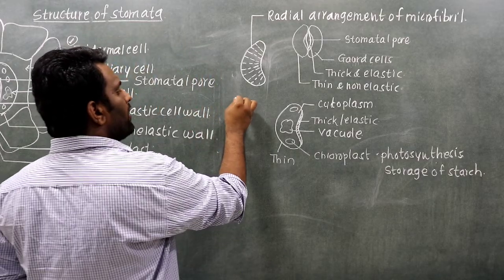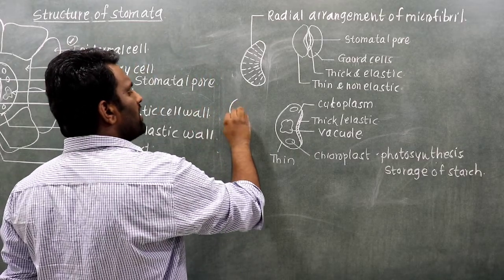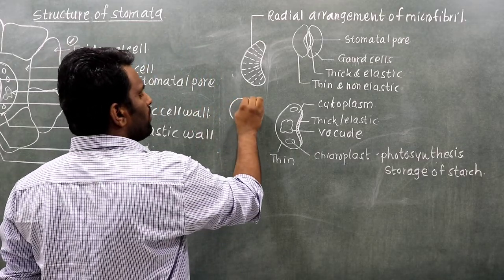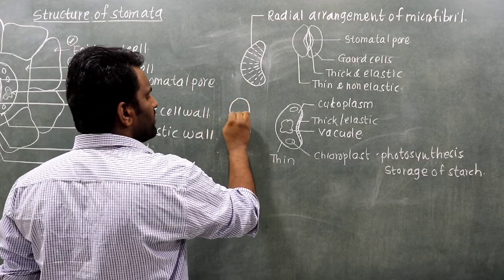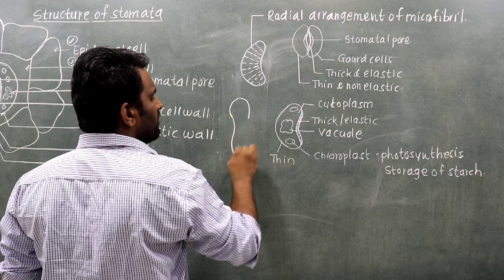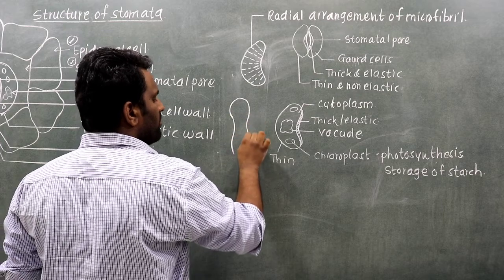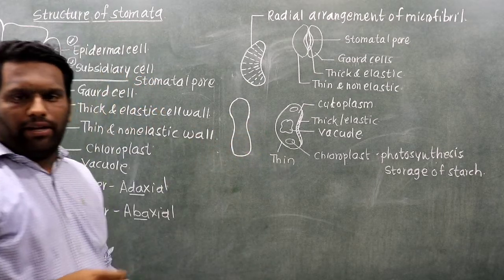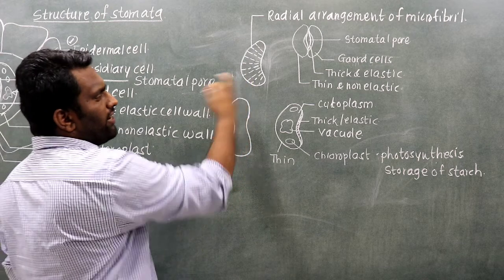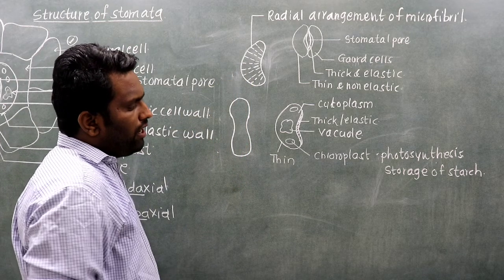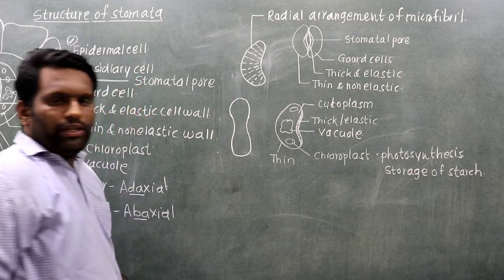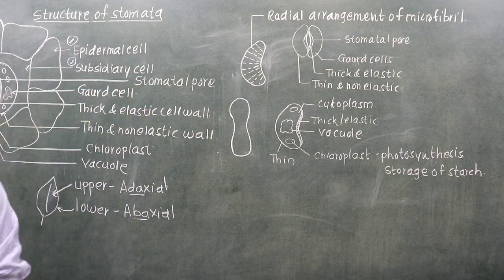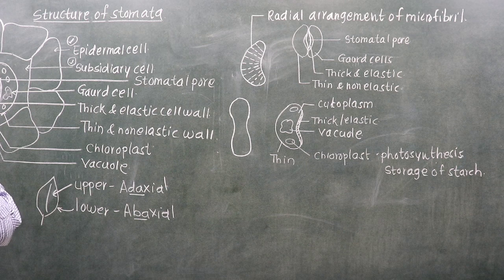In monocots, the guard cell has a dumbbell shape. In dicots, the guard cell has a kidney shape. These different shapes correspond to the different mechanisms of stomatal opening in monocot and dicot plants.